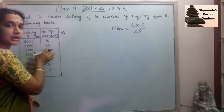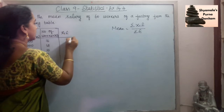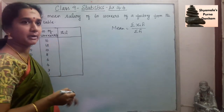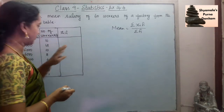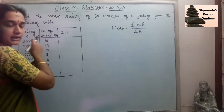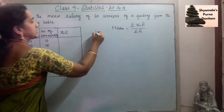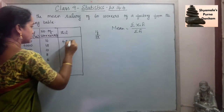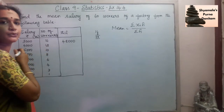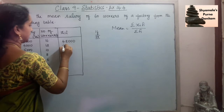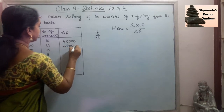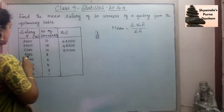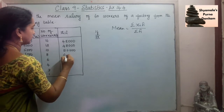We will add one more column, that is XiFi — we need to multiply the first column Xi and the frequency Fi to get XiFi. The first one is 16 into 3000. 16 into 3 is 48, so we get 48,000. Then 4000 into 12: 12 fours are 48, so this is also 48,000. Then 5000 into 10 is 50,000. Then 6000 into 8 is 48,000.